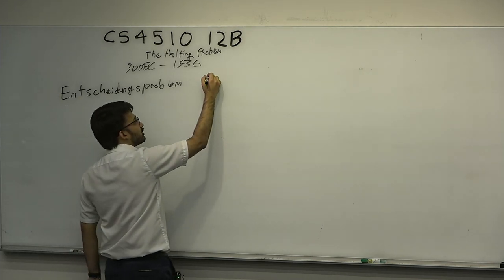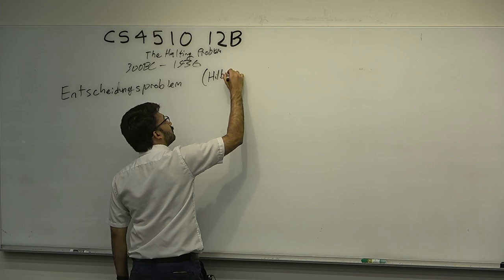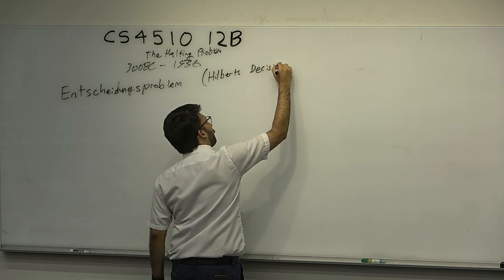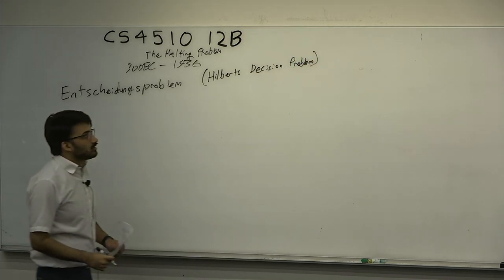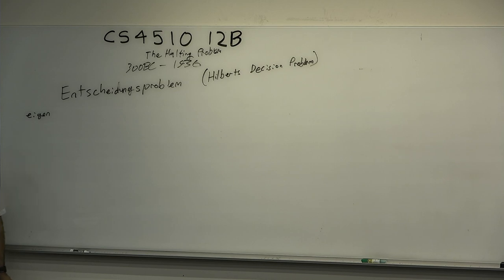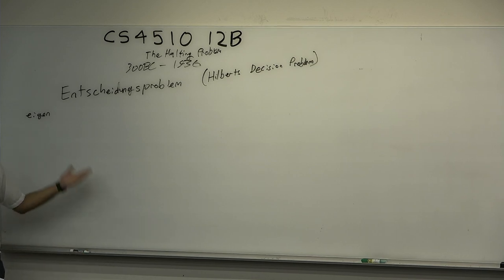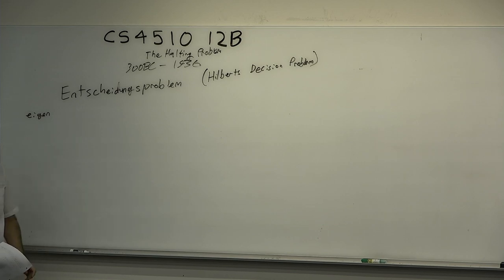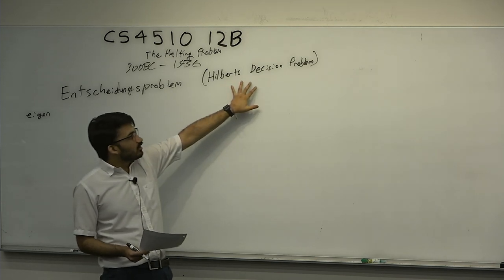The Entscheidungsproblem is literally just German for 'decision problem,' but I think it should be called Hilbert's decision problem. The Germans are really bad at naming things—if you translate it, it quite literally just means decision problem. Do you know what 'eigen' means in German? It means characteristic or special. So when the Germans said eigenvalue and eigenvector, they were saying 'my special vector, my special value.' When we translate into English, we can't call it that, so we just say eigenvalue, eigenvector. The Entscheidungsproblem is really just Hilbert's decision problem.